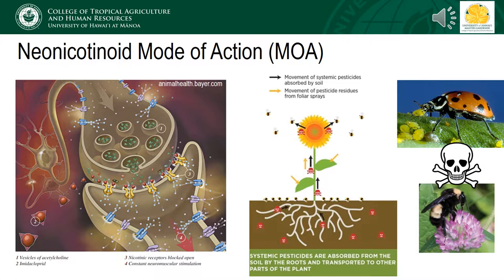The neonicotinoid insecticides, or neonics for short, activate the nicotinergic acetylcholinesterase receptors in the insect's nervous system. Basically, once exposed, the insect's nervous system fires continuously, causing tremors, paralysis, and eventually death. Sometimes you may see a bee or wasp flying in a fast circle near the ground. This disruption to orientation could be indicative of exposure to a neonic.